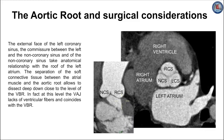The external wall of the left coronary sinus, the commissure between the left and the non-coronary sinus, and the non-coronary sinus take anatomical relationship with the roof of the left atrium. The separation of the soft connective tissue between the left atrial muscle and the aortic root allows easier dissection down to the level of the virtual basal ring. At this level, the ventricular-aortic junction lacks ventricular fibers and coincides with the virtual basal ring.